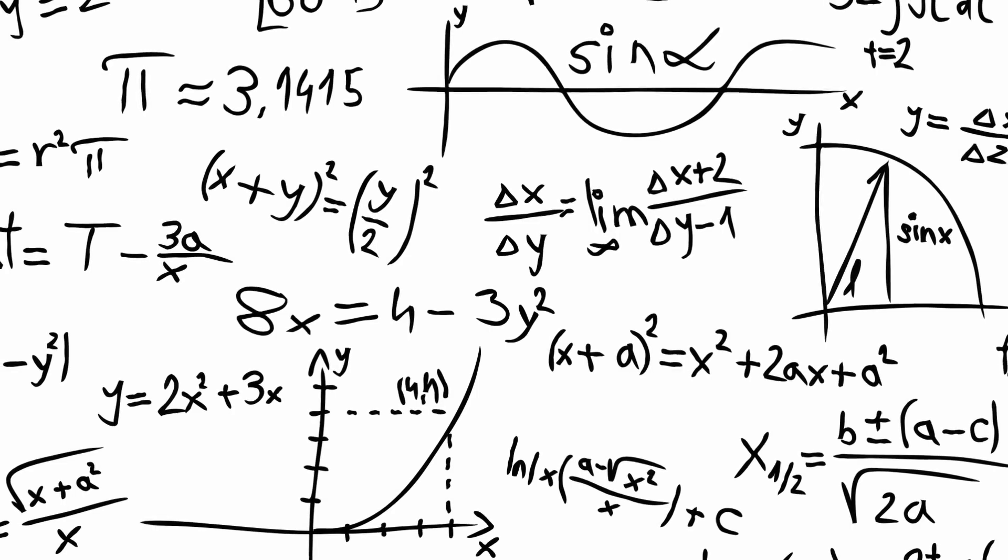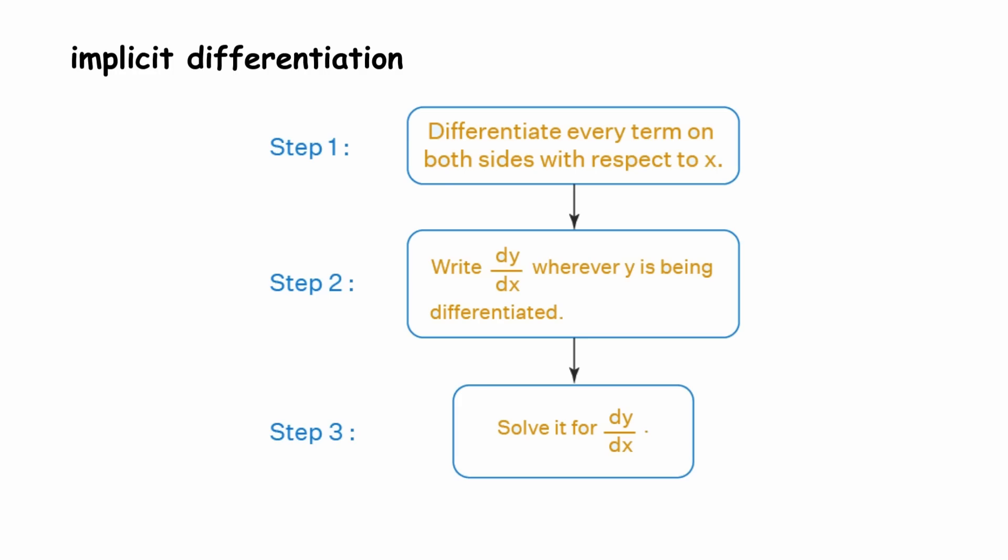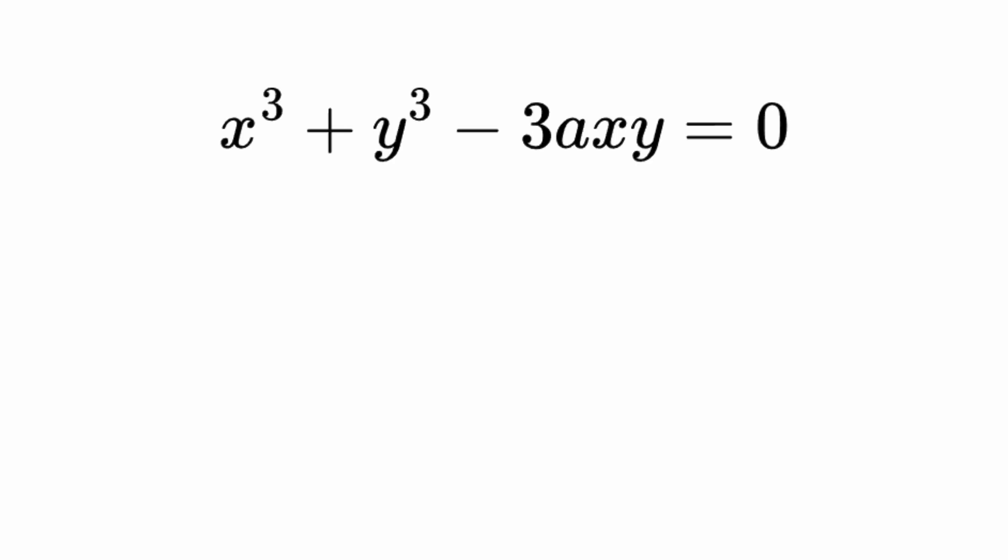Let's take up Descartes' challenge ourselves. Luckily today, we have the benefit of calculus to help us out. In particular, we must use a technique known as implicit differentiation, which allows us to find the slope of the tangent line to any point on an implicit curve. Let's take our equation from before.